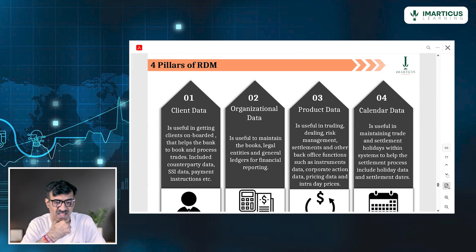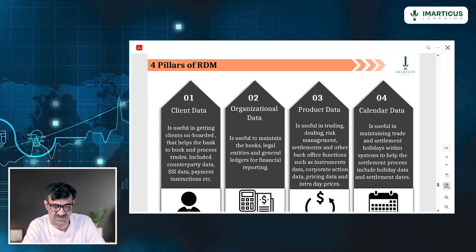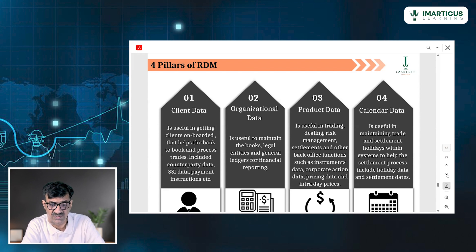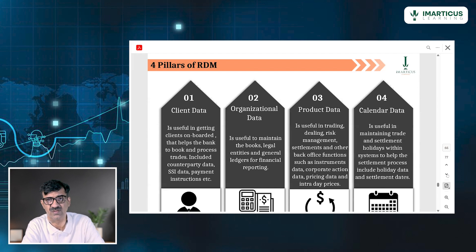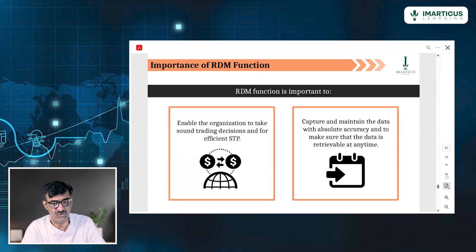Client data is the data required for onboarding the client — SSI and client details. Organizational data is useful for maintaining books, legal entities, and general ledgers. Product data is useful in trading, dealing, risk management, corporate actions, pricing, and intraday prices. Calendar data covers trade settlement holidays — when markets are working and when they are not.